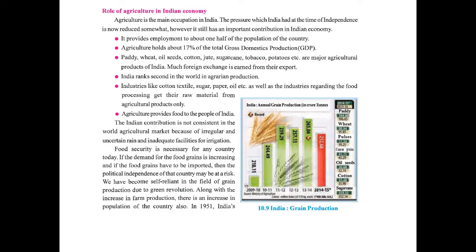Now let's see the role of agriculture in India's economy. Agriculture is the main occupation in India. Though the pressure from agriculture has reduced somewhat since independence, it still has an important contribution. It provides employment to about half of the country's population. Agriculture holds about 70% of total gross domestic production (GDP). Paddy, wheat, oilseeds, cotton, jute, sugarcane, tobacco, potatoes, etc. are major agricultural products of India, from which much foreign exchange is earned through exports.